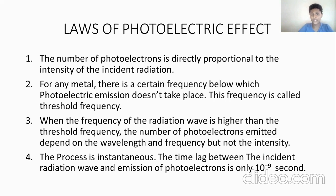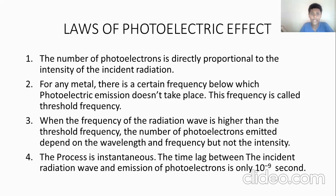For any metal, there's a certain frequency below which photoelectric emission doesn't take place. This frequency is called threshold frequency. So for any reaction or process to happen, there's a certain point — only above that point does something happen. Only when the frequency of the wave reaches the threshold frequency will photoelectrons be emitted from the metal surface. If it doesn't reach the threshold frequency, there's going to be no process — nothing happening. When the frequency of the radiation wave is higher than the threshold frequency, electrons are ejected. It doesn't depend on the intensity of the electromagnetic wave, but rather on the wavelength and frequency.